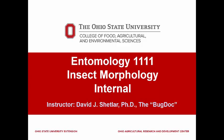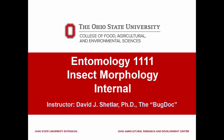Now let's move into the interior of the insect body. We will only go through the major parts here and discuss the functions of the internal organs in later lectures on digestion, excretion, respiration, circulation, reproduction, and the integument. The insect digestive system consists of three major sections: the foregut, midgut, and hindgut.